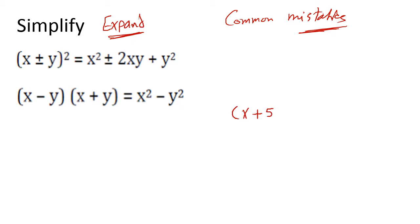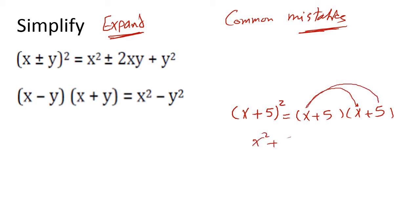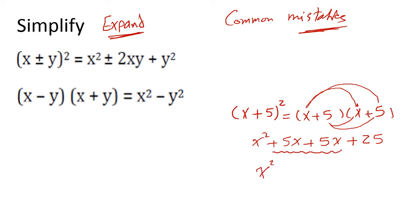For example, (x + 5)² — if you want to expand it, write it as two brackets of (x + 5) with the same sign. Then multiply: x by x gives x², x by 5 gives 5x, 5 by x gives 5x, and 5 by 5 gives 25. In the middle you have two like terms: 5x + 5x = 10x.